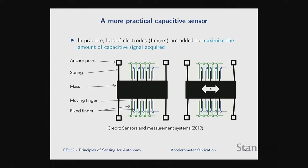It's still the same concept — you have a bunch of plates or fingers tied to your proof mass that move with it, and externally you have fixed capacitor fingers. Now you have many of them, like a comb design. As your proof mass moves, you pick up a signal linearly proportional to the displacement, but now you have much more capacitance. You've increased the surface area between the electrodes by times N, where N is the number of fingers, meaning you pick up a stronger signal. You can increase your SNR by orders of magnitude with this trick.